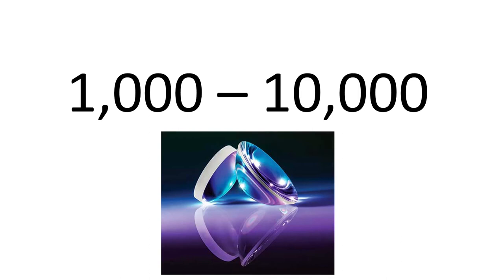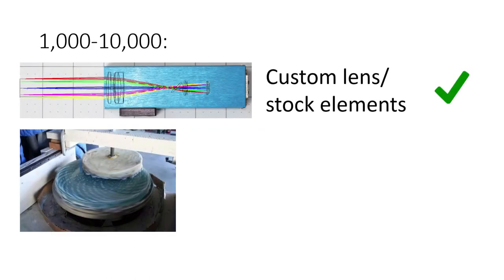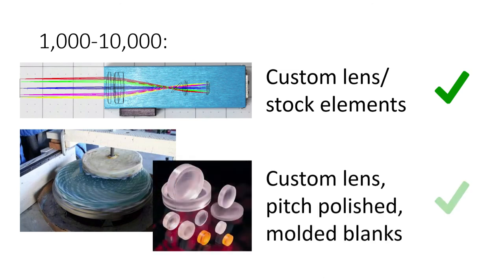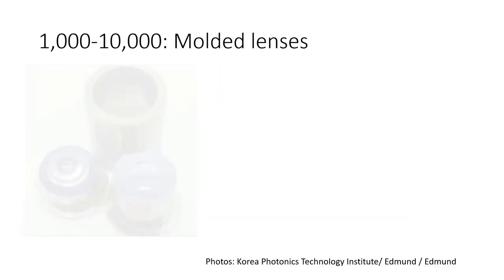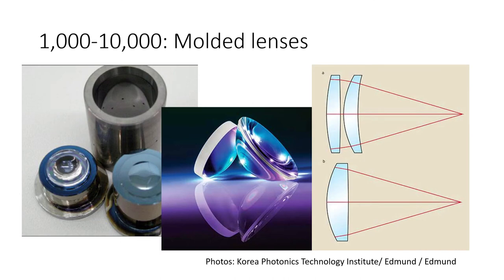Our next tier, our next order of magnitude, up to 10,000. Things get a little more interesting here, but you can still do a custom lens from stock elements. You can still pitch polish and probably with molded blanks, but you can also do something else. You can do a net molded lens, and this is really cool because you're no longer constrained to spherical surfaces. So at the top is a little optical system made of spherical surfaces, probably pitch polished. But on the bottom is the same system made in aspheres, and it's got the same performance in one element as two.